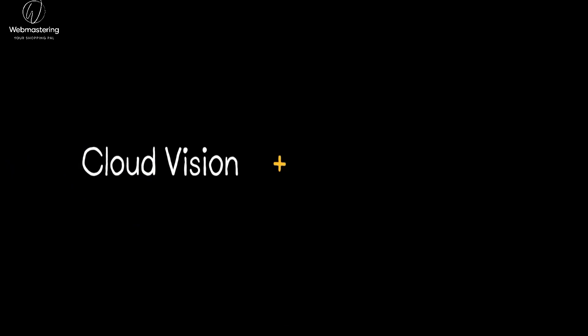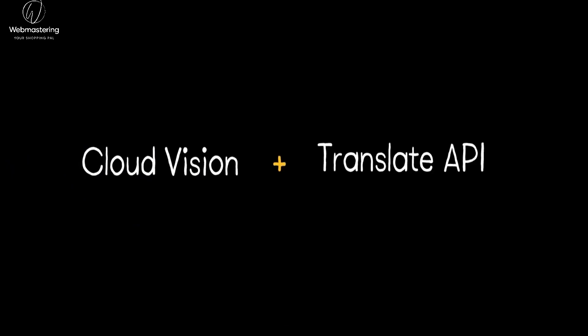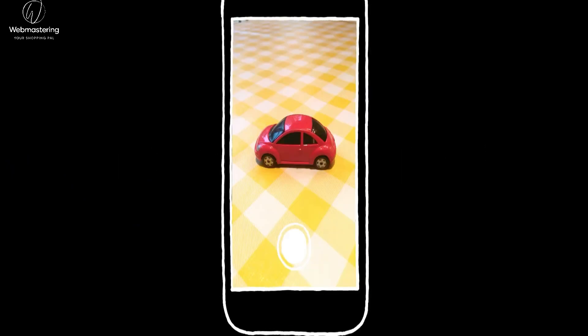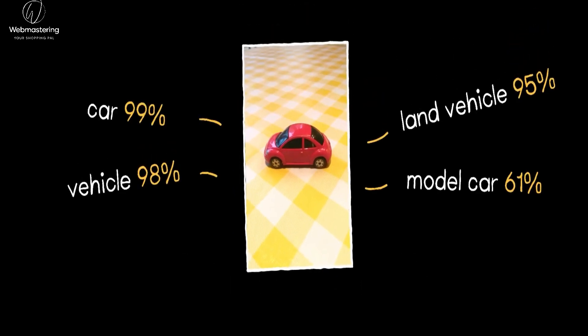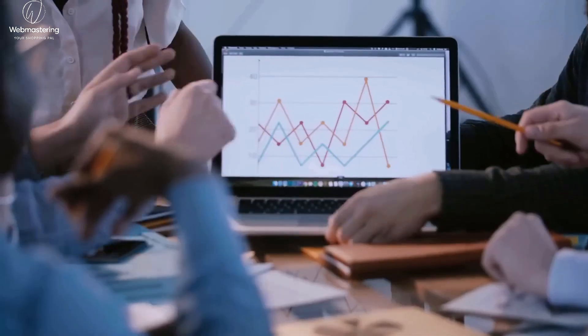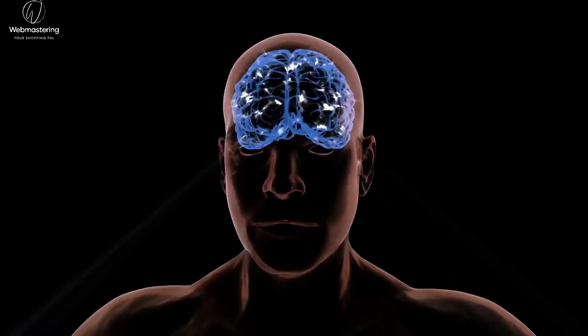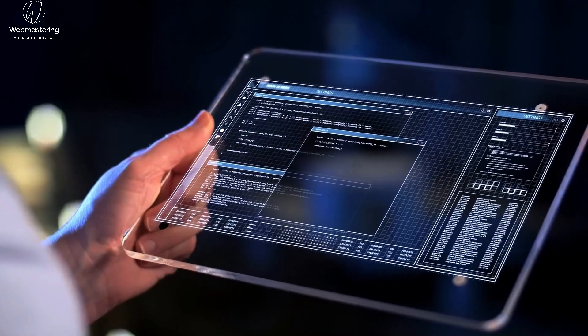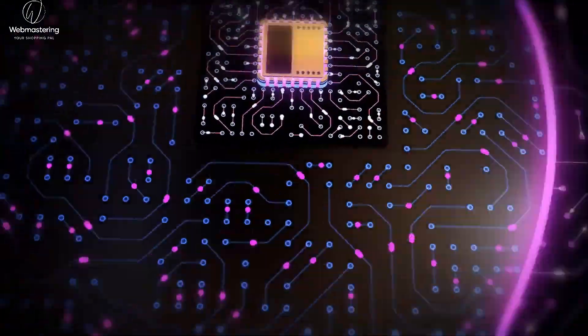Number 5: Thing Translator. With this tool, users can simply aim their camera at an object and instantly receive its translation in another language. Leveraging the Cloud Vision API and Google's Translate API, this translator is a boon for foreign travelers or individuals embarking on a journey to learn a new language. As the Google API set continues to evolve, anticipate the Thing Translator becoming increasingly invaluable over time.